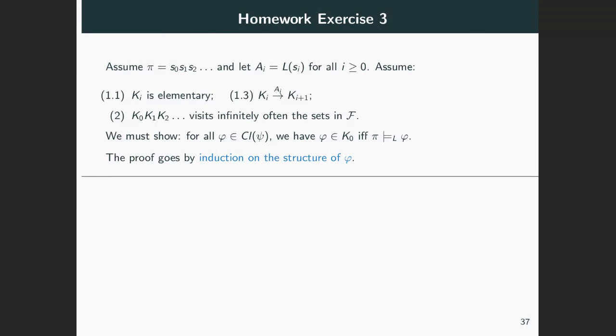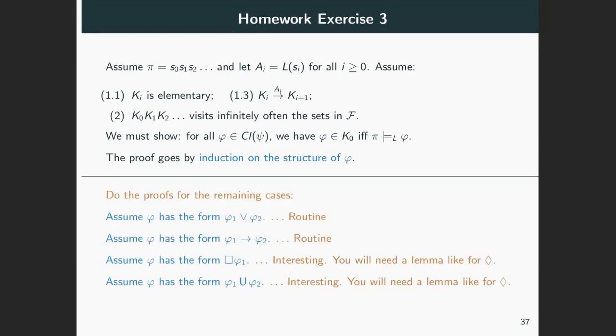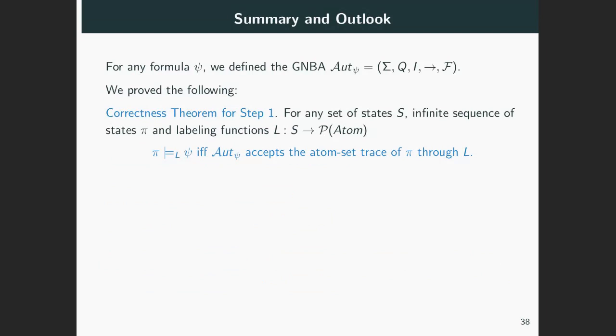As homework, please prove the remaining cases in the proof of the main theorem. I have shown the proof for all connectives except for or, implies, always, and until. The cases of the propositional connectives or and implies are completely routine and perfectly similar to that of and. But they are good as warm-up exercises. Whereas the cases of temporal connectives always and until are interesting. They will need the conditions defining the fulfillment sets of these connectives, similarly to how we used these conditions in the case of the eventually connective.